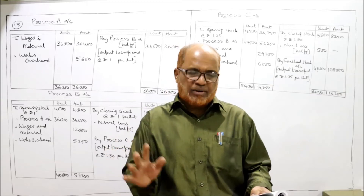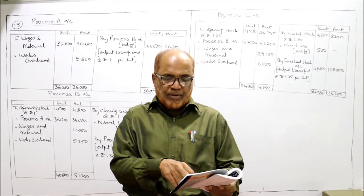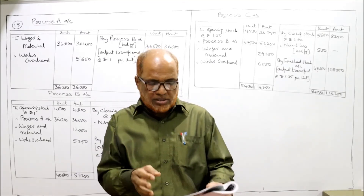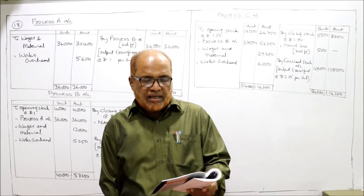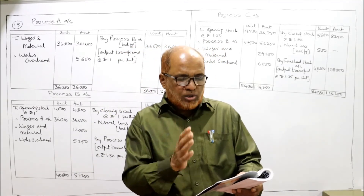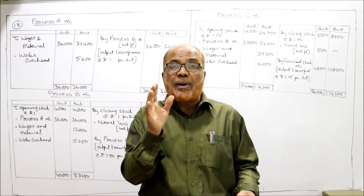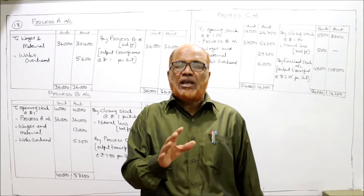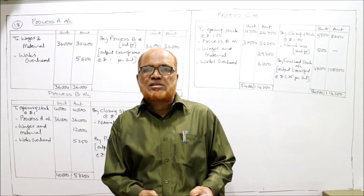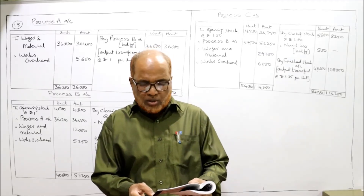Production in units: process A — 36,000; process B — 37,500; process C — 48,000. Opening stock and closing stock are also given. Stock on 1st July is opening stock; stock on 31st July is closing stock. There are no stocks for process A — neither opening nor closing stock. For process B: opening stock 4,000 units and closing stock 1,000 units. For process C: opening stock 16,500 units and closing stock 5,500 units.